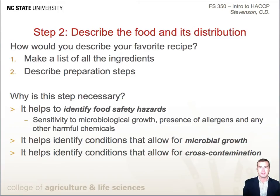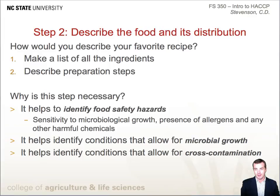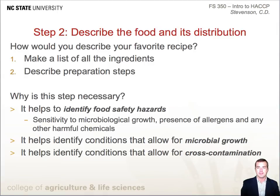Now let's turn to the second preliminary step of describing the food and its distribution. This step is fairly straightforward. Think of this as if you were describing to a friend how to make your favorite cake, pizza, barbecue pork, or any other favorite food. First, you are going to list all the ingredients in the product, and then describe how the food is prepared. The list of ingredients will help you to identify which ingredients pose food safety hazards in terms of allergens, sensitivity to microbiological growth, and any other considerations that might be regulated, such as nitrate levels in meats.